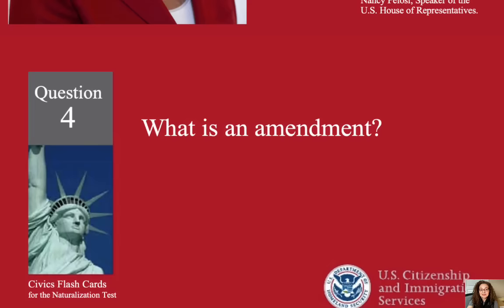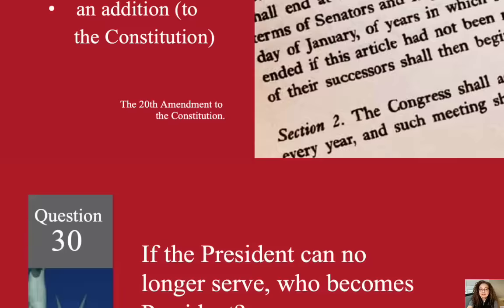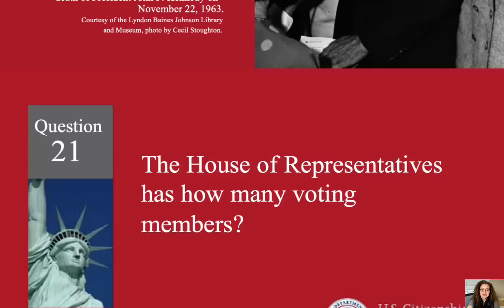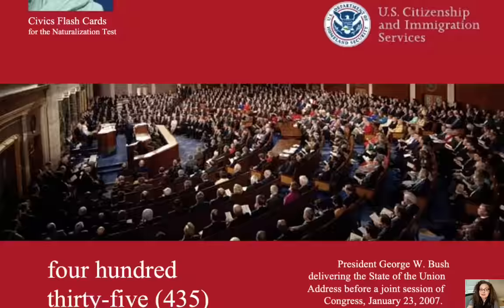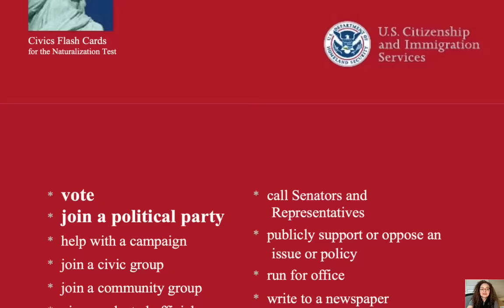What is an amendment? A change. If the president can no longer serve, who becomes president? The vice president. The House of Representatives has how many voting members? 435. What are two ways that Americans can participate in their democracy? Vote and join a political party.